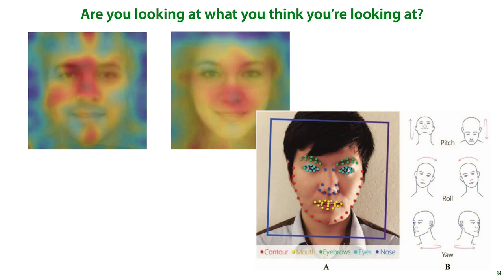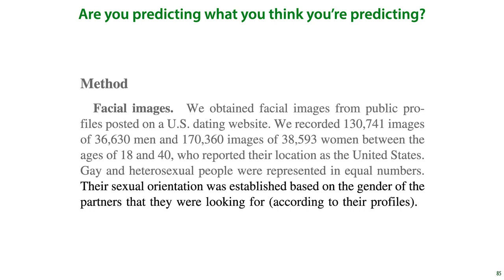And finally, the deep neural network used to extract features from these pixels was not actually trained on this data, but on another facial dataset. Only its features were fed to a shallow classifier that then learned from these labels. This severely limits the ability of the classifier to pick up on surface details.